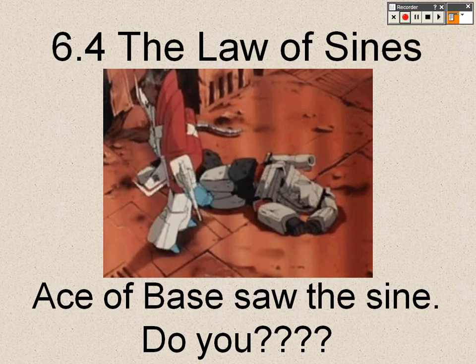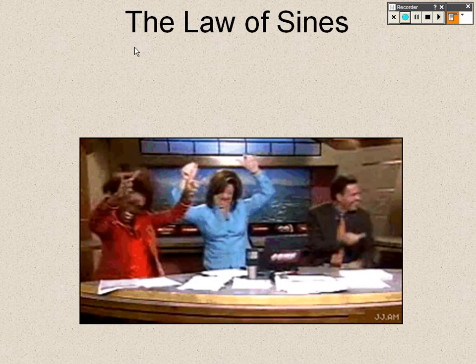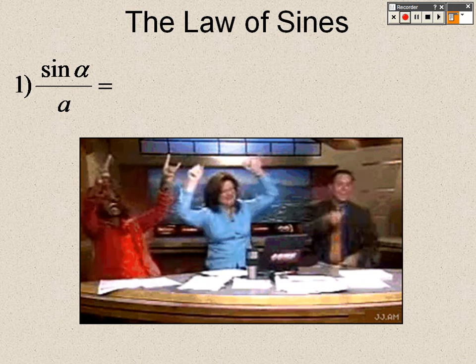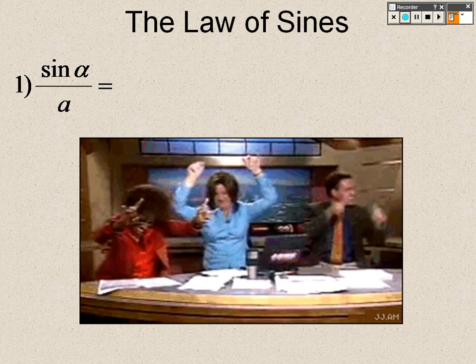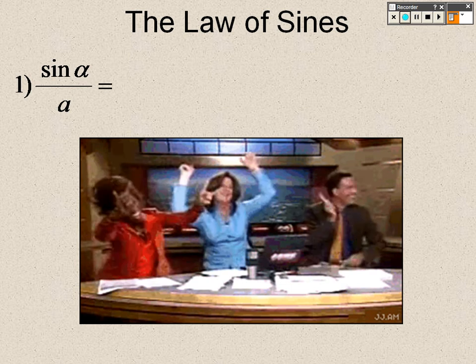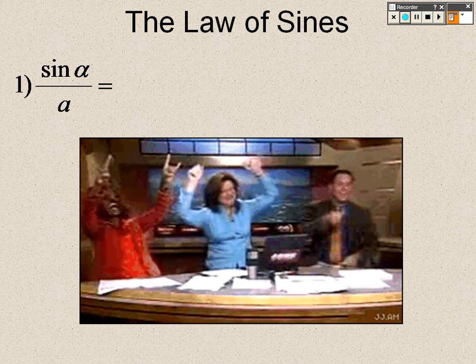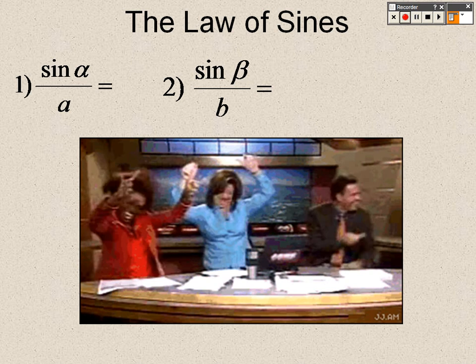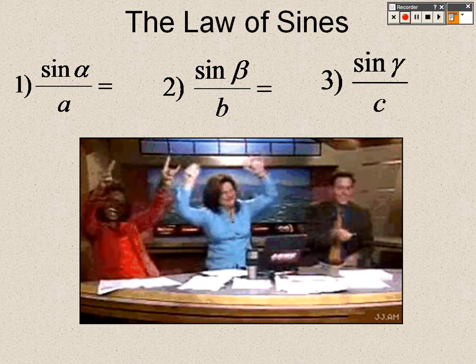So let's take a look here at the Law of Sines. The Law of Sines is an easy way to solve any triangle without having any right angles in it whatsoever. You just take the sine of the angle and the side across from it, and you set it up as a fraction. So sine of alpha divided by A equals sine of beta over B equals sine of gamma over C.